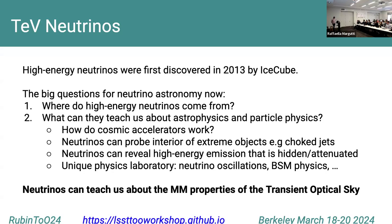Neutrinos can tell us about the interior of extreme objects and reveal when high-energy emission is hidden or attenuated. If you have a neutrino at 100 TeV energy and a photon at the same energy, the photon from a distant source will almost certainly never reach Earth due to attenuation, but the neutrino will travel all the way and tell us that there is high-energy emission going on. Neutrinos also offer exciting physics tests — this is the only way to test neutrino oscillations at high energies and explore beyond-standard-model physics.